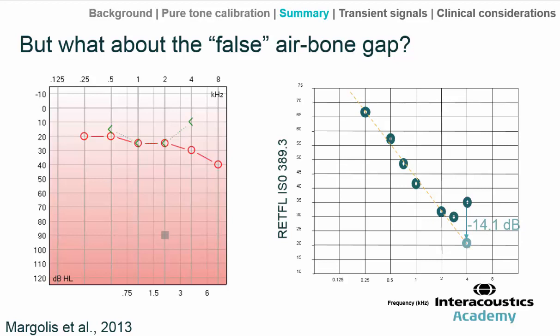If this 14.1 dB is subtracted from the reference equivalent threshold force level, it falls much closer to the line of best fit, or the extrapolated line of best fit. So it seems as though there's an error in the reference equivalent threshold force level. They didn't check 3 kHz as they didn't have enough data, but it's probably the case at 3 kHz too.